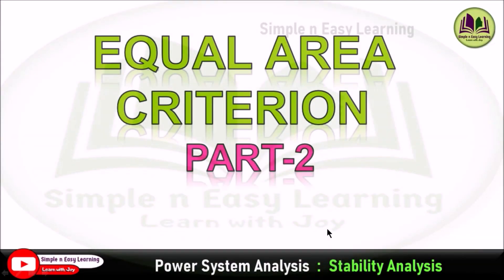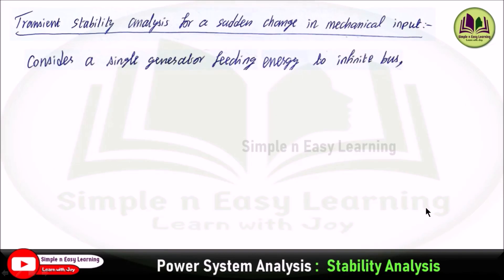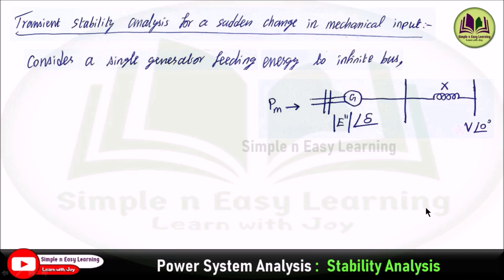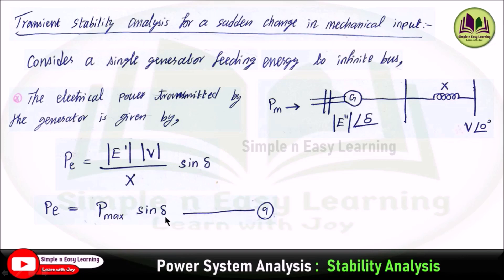Considering the transient stability analysis for a sudden change in mechanical input, consider a single generator feeding energy to an infinite bus bar. The mechanical energy is fed to the generator, which produces electrical energy. The induced EMF is E at angle delta, transferred to the infinite bus bar through line reactance X. The electrical power transmitted is P = (E·V/X)·sin(delta), or P = Pmax·sin(delta), where Pmax = E·V/X.